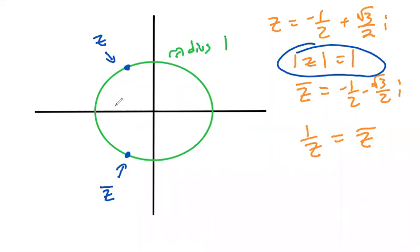So any complex number with modulus one that's going to be falling on the unit circle has the property that its conjugate is also its reciprocal. And so that's pretty cool.